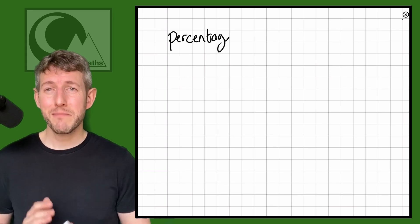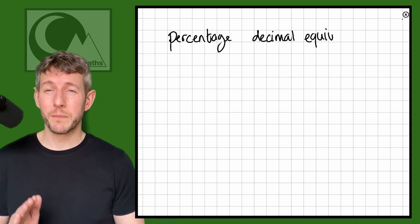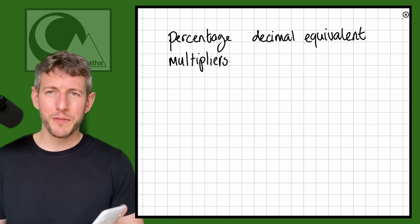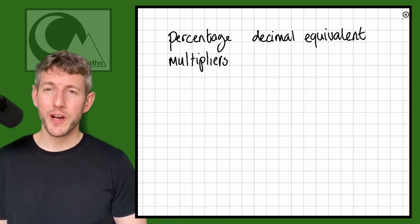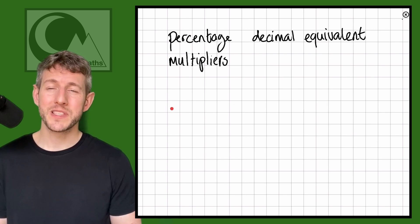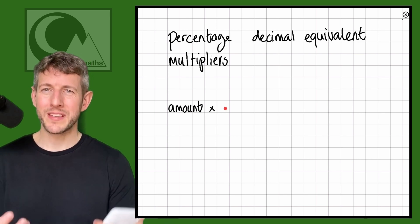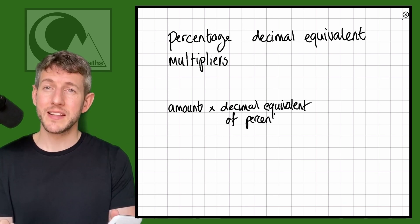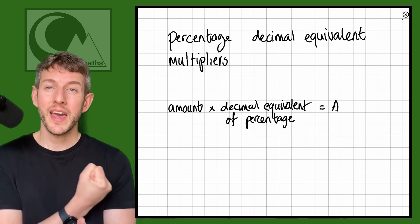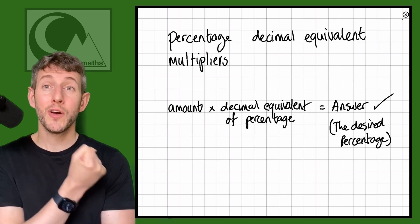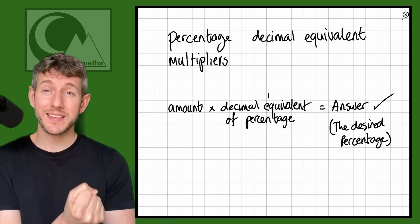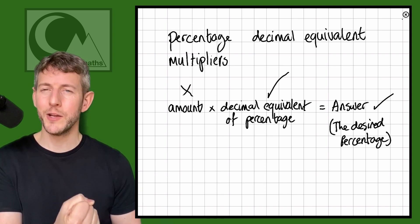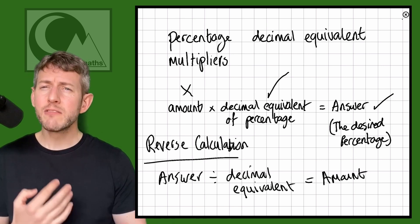Now let's take a look at the same three questions using the decimal equivalent percentage multipliers. The decimal equivalent multiplier is the decimal version of the percentage we want to find. Here we have the answer and the percentage, but not the original amount — so we're going to have to use a reverse calculation.